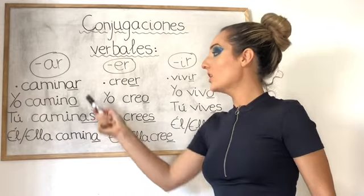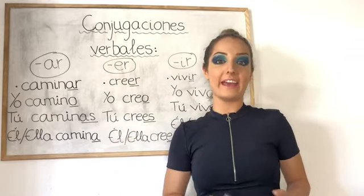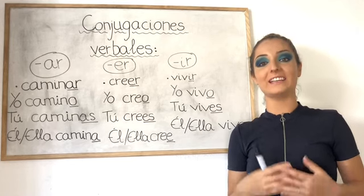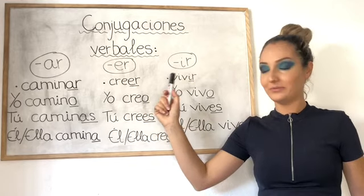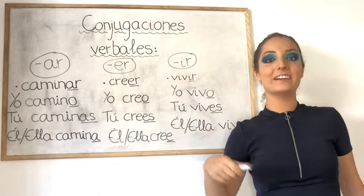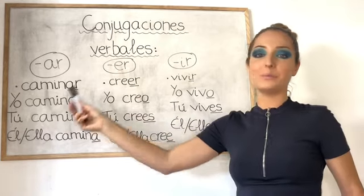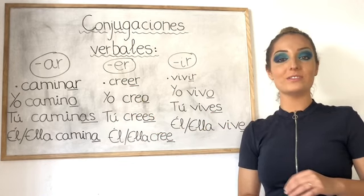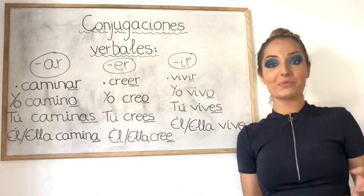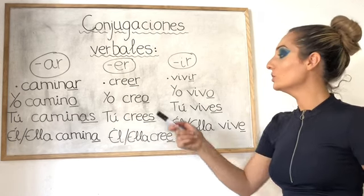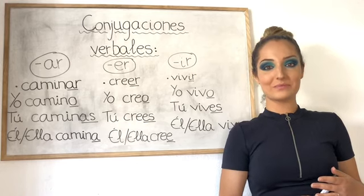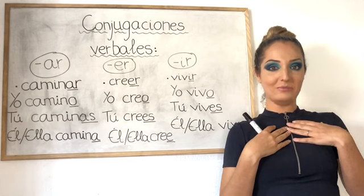You remove AR and just add O, or AS, or A. Then we have ER — our second conjugation. Every single verb in Spanish ending in ER, you will need to add these endings. For example, I believe — yo creo. It's from the verb CREER, to believe. We remove ER and add O: yo creo. Then we have tú crees — you believe.